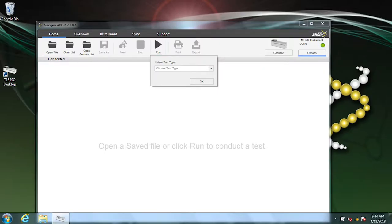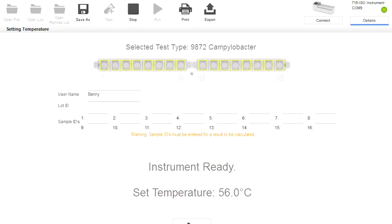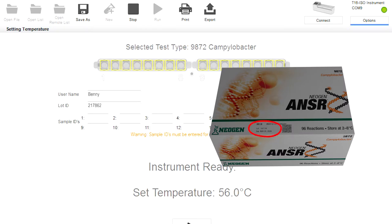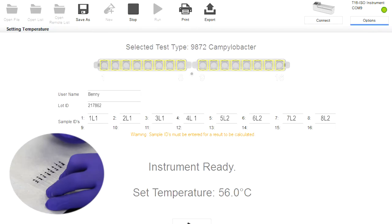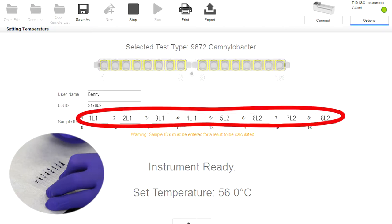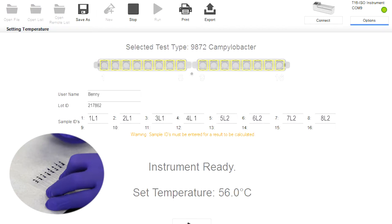Remove your gloves and from the computer, select Run. Select 9872 Campylobacter from the Test Type drop-down menu, then click OK. Fill in the username and lot ID from the kit and corresponding labels from your samples in the sample IDs. These should match the cluster tubes as well. If you do not put in a sample ID next to the well number, the reader won't read it even if it has a sample. Be sure to provide an ID for every well you're running. In this case, we are only running 8 samples, so wells 9 through 16 are empty.